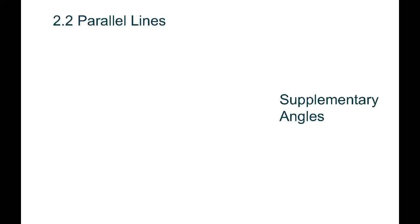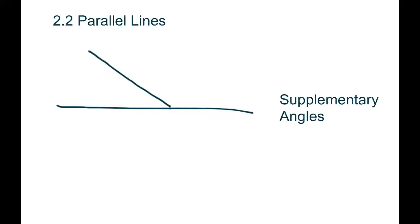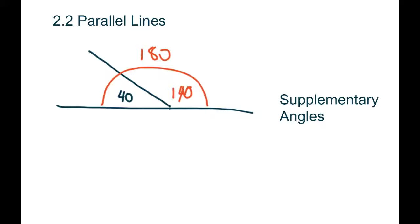The first thing we want to understand is what a supplementary angle is. A supplementary angle is when we have a straight line and then cut that line into two different angles. If we give this angle 40 degrees, we know the other angle has to be 140, because supplementary angles make a straight line and a straight line adds up to 180 degrees. Supplementary angles are two angles side by side on a straight line that always add up to 180.